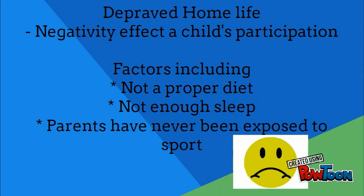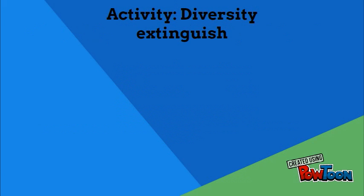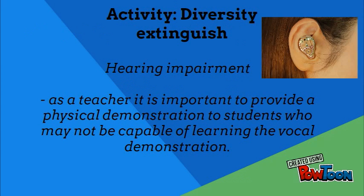Giving clear instructions to the class at the start of the activity is essential to ensure that everyone understands how to complete the drill. However, the variety of diverse needs of students can make explaining the activity quite complicated. For example, in this class there is a student with a hearing impairment. After just explaining the activity verbally, this student would not know how to properly complete it. Therefore, as a teacher, it is important to provide a demonstration to ensure the class understands. This ensures that the diverse need of the student is taken into account without singling out the student and embarrassing them in front of their peers.